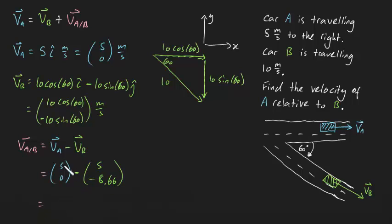So what does this turn into? Well, this will turn into 5 minus 5, which will be 0. And this will turn into 0 minus -8.66, which will be 8.66 meters per second. And this is actually our answer. We could box this off and get full marks for this if we wanted to.